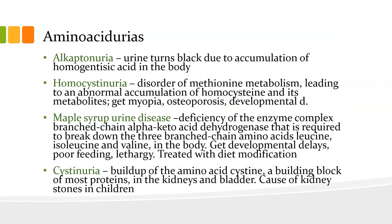Alkaptonuria — the urine turns black due to an accumulation of homogentisic acid in the body. Homocystinuria is a disorder of methionine metabolism and leads to abnormal accumulation of homocysteine. You get myopia, osteoporosis, and developmental delays.